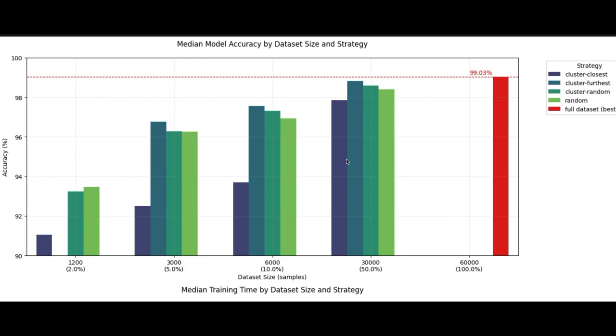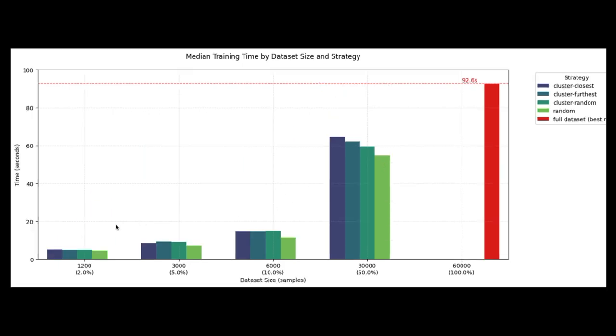And so here are the median model accuracies for the various experiments I did compared to this red baseline. And as you can see, even with half the data, the results are pretty close. Not only that, but the training time is significantly decreased as well.